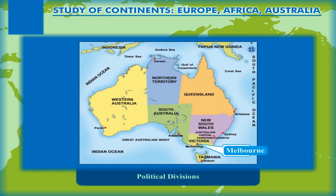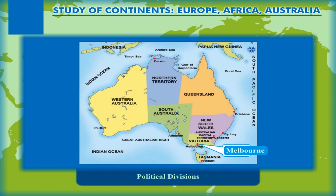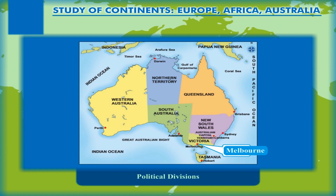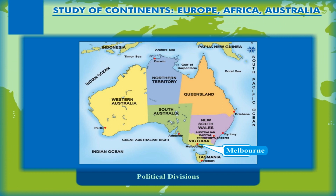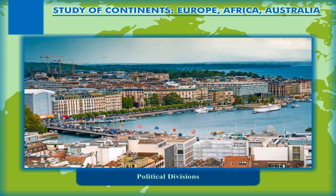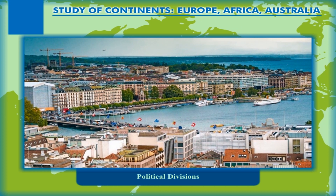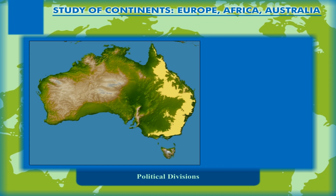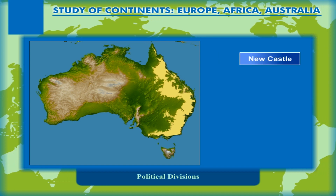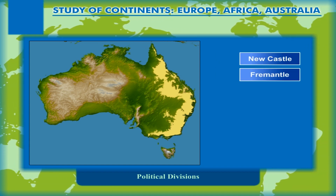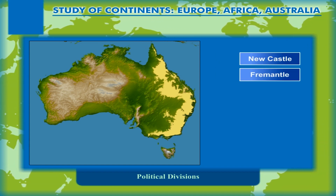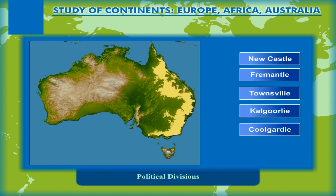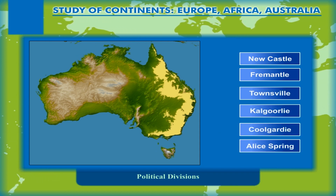Melbourne, which is the capital of Victoria, is also an important industrial centre and port of Australia. Other important cities include all the capital cities of the states of Australia and the ports of Newcastle and Fremantle, and the industrial centres like Townsville, Kalgoorlie, Coolgardie and Alice Springs.